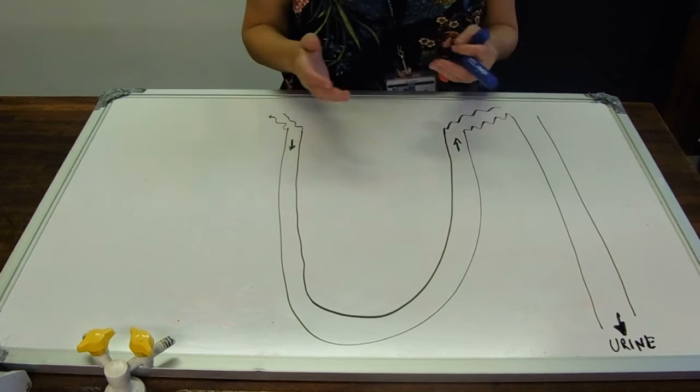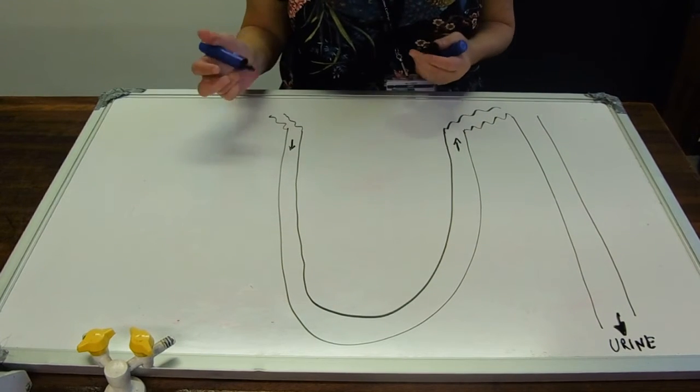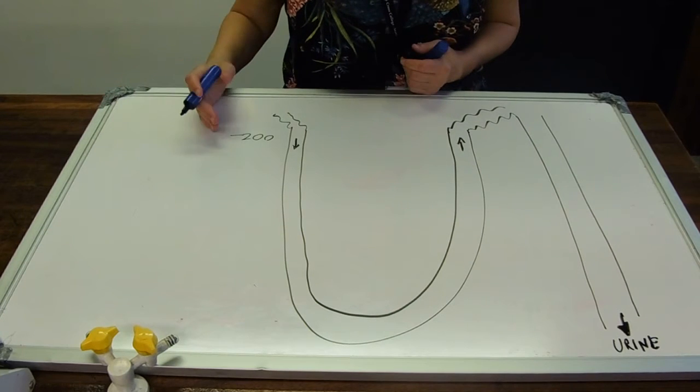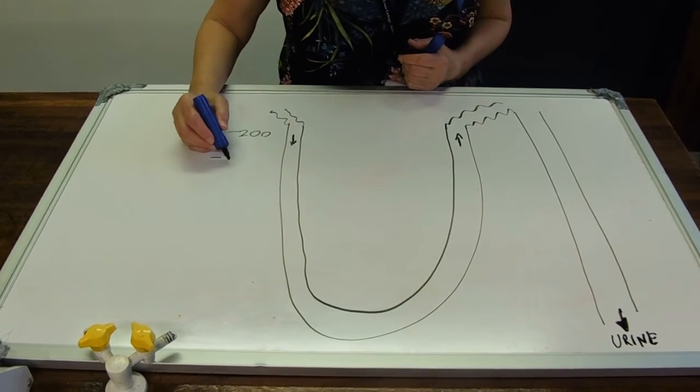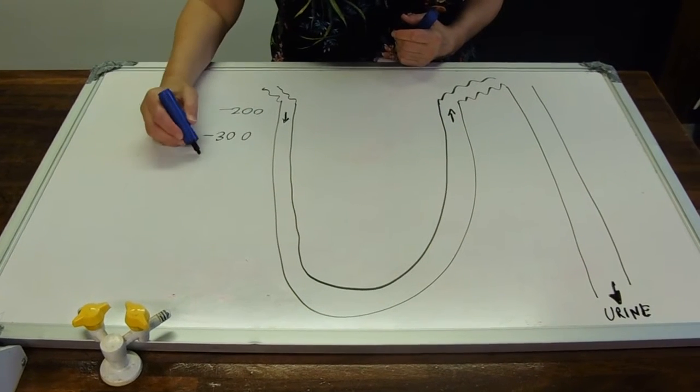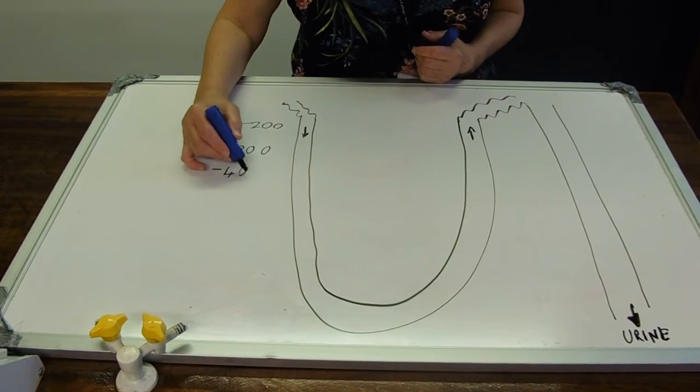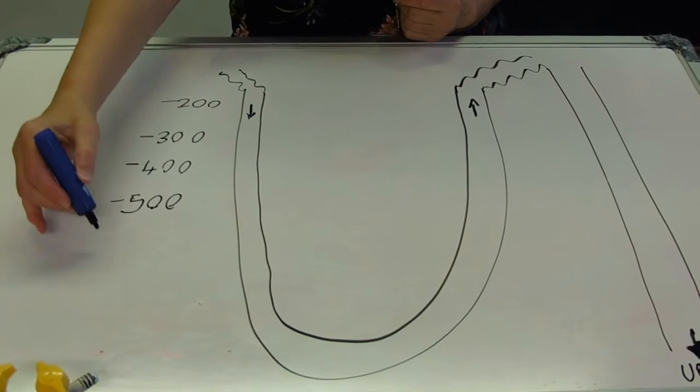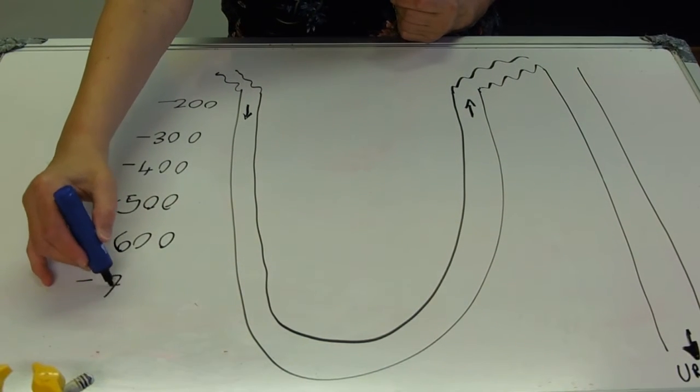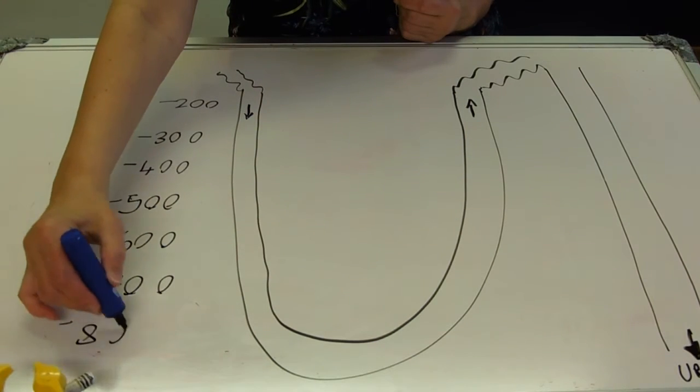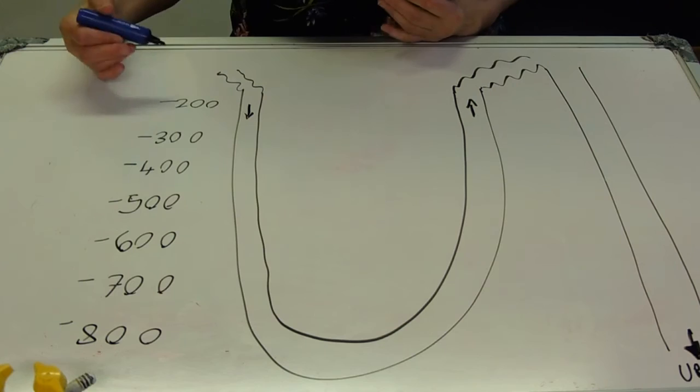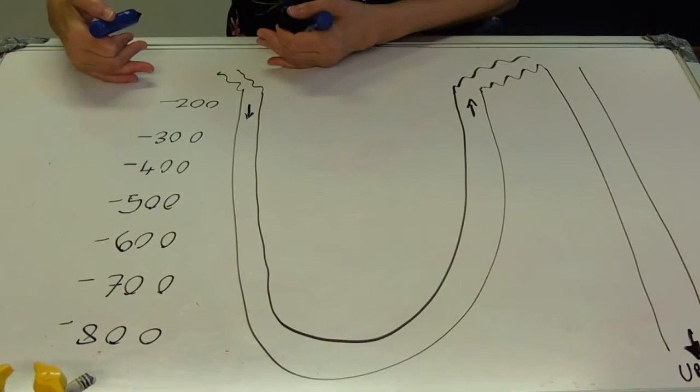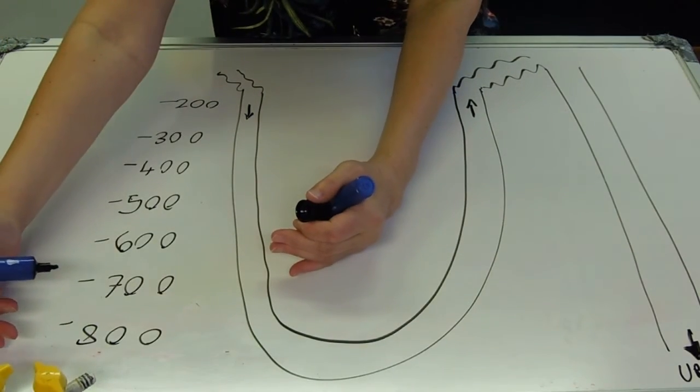So in fact, what the loop of Henle does is it obligingly makes a water potential gradient, which means that up at the cortex end, you might have minus 200 water potential. As you travel down through towards the pelvis, it might go minus 300, minus 400, 500, 600, 700, 800. So we've got a gradient here with less salt at the top, more at the bottom. Higher water potential up near the cortex, lower water potential down near the pelvis.